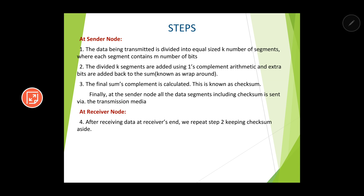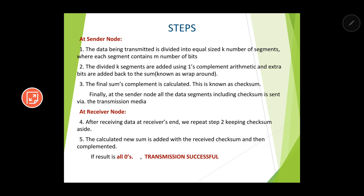Now at the receiver's node: after receiving data, we repeat step two keeping the checksum aside. We divide the received data into equal-size segments, keep adding them, and use the concept of wrap-around. Whatever new sum we get after following step two again, that new sum will be added to the received checksum. At the end we complement the result — if the result is all zeros, the integrity is restored and transmission is successful. If the result is not all zeros, transmission is unsuccessful.